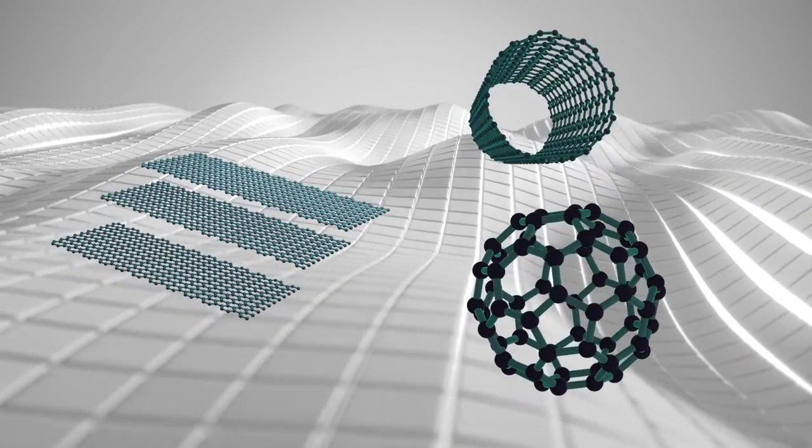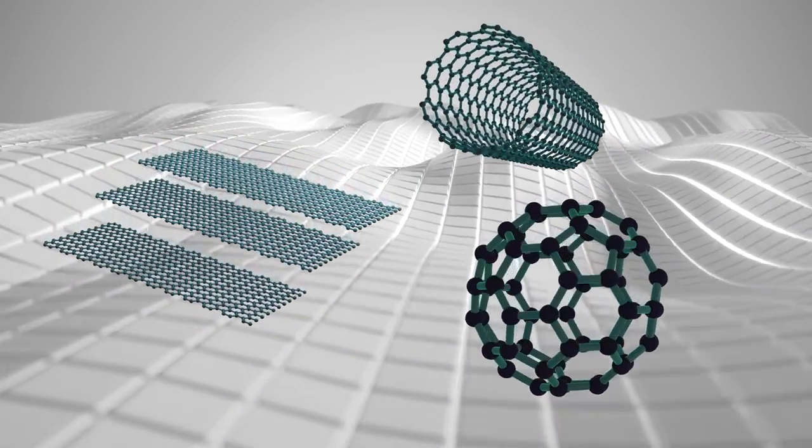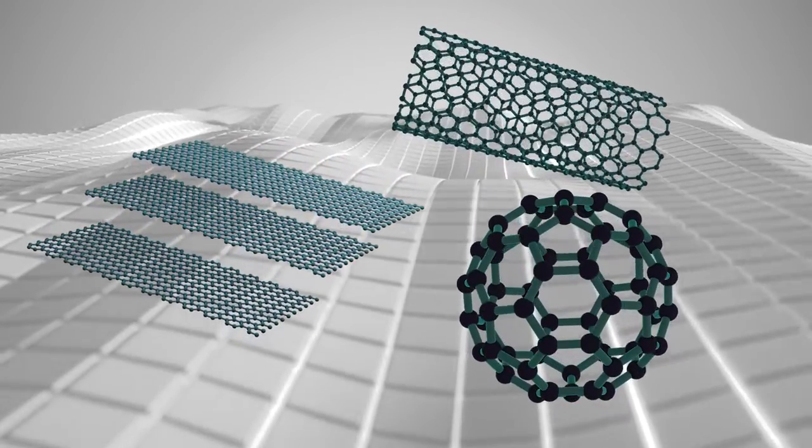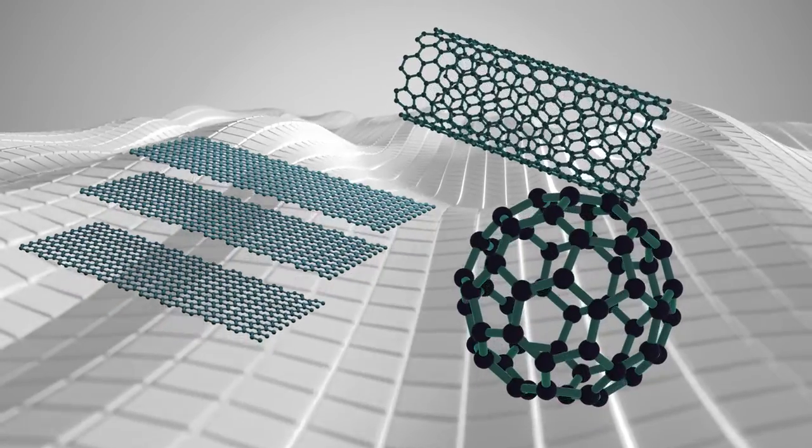Carbon nanomaterials provide an extreme example of this. All of the atoms in a buckyball, a single-walled nanotube, or a sheet of graphene are surface atoms. There is no core volume.